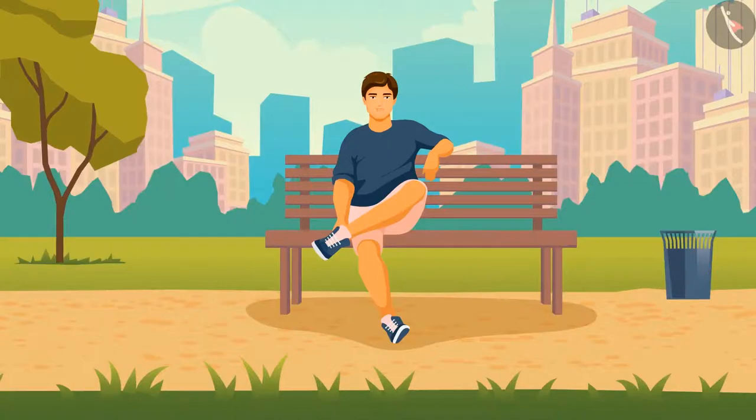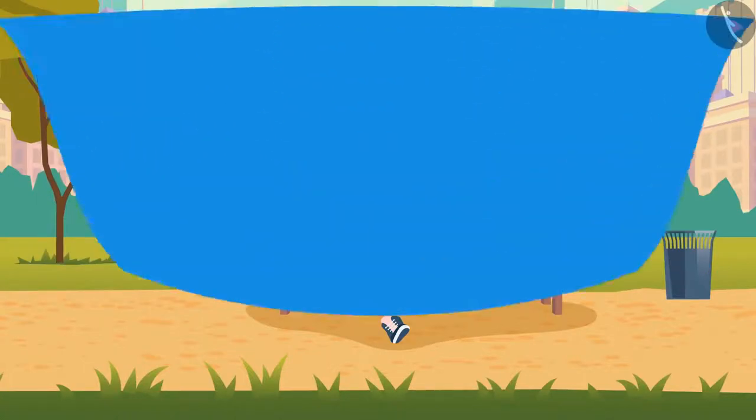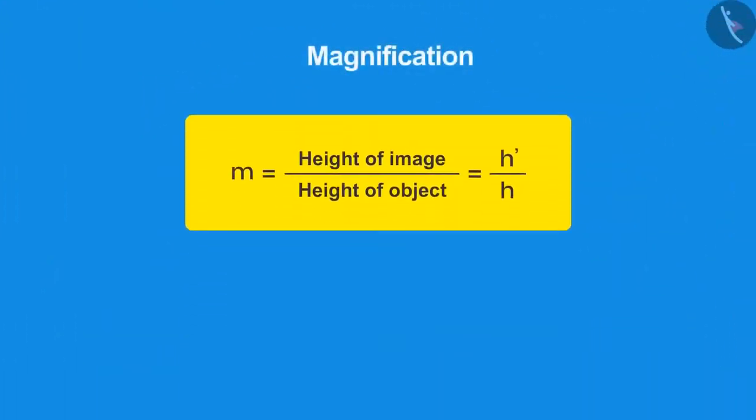With the lens formula, there is another property which we know by the name of magnification. Like in the case of a mirror, it is the ratio of the height of the image to the height of the object.